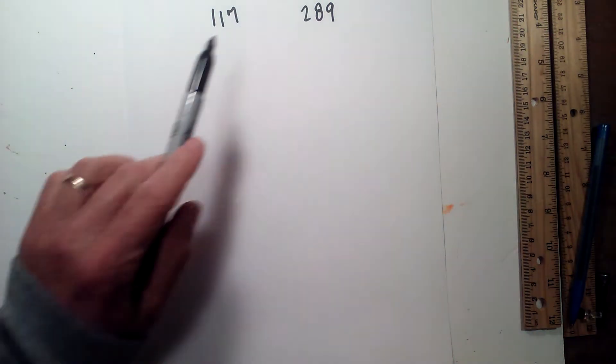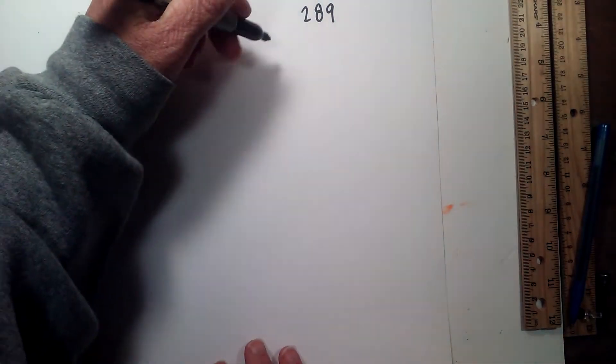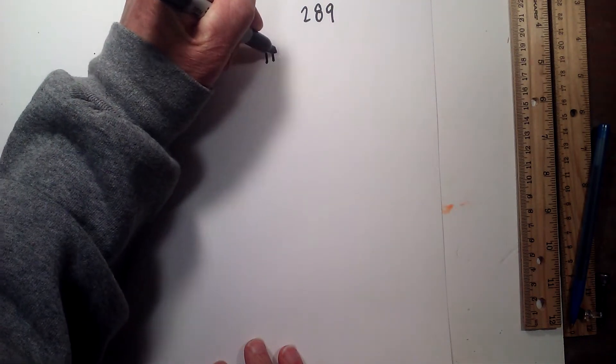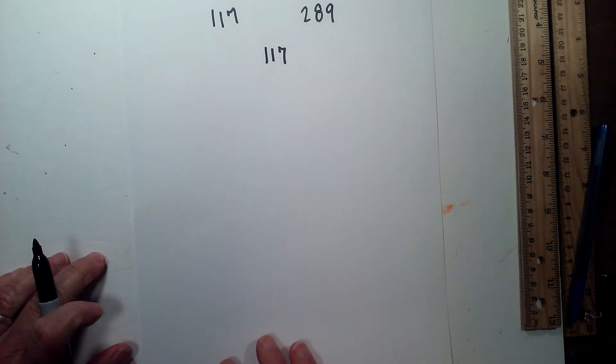Math and Science and the prime factorization of 117 and 289. So let's get started. Prime factorization is finding which prime numbers multiply together to equal the original number.